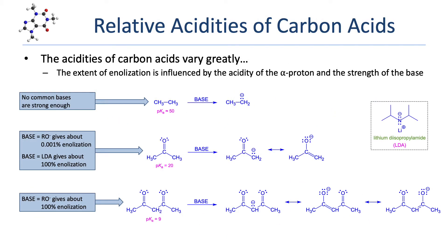We don't usually consider hydrogens attached to carbons to be particularly acidic, but the acidities of carbon acids actually vary considerably. Here we show the deprotonations of three very different carbon acids. In the first reaction, we see the deprotonation of an alkane, which has a pKa of about 50 — there are really no common bases that can deprotonate an alkane, as the conjugate base is simply too unstable. In the second reaction, we see the deprotonation, or enolization, of a ketone, which typically has a pKa of around 20. The conjugate base is a resonance-stabilized enolate, and the resonance spreads out the negative charge, enhancing stability greatly.